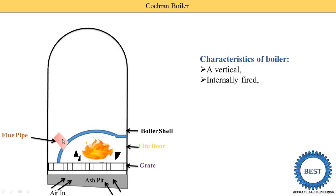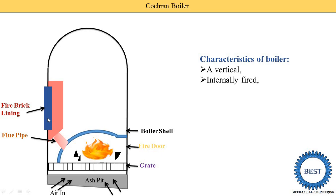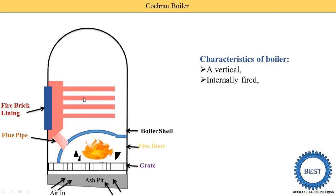The hot gases are supplied to the fire tubes by using the flue pipe. The orange part shown here is the combustion chamber, and it has a fire brick lining. This lining is provided so that heat is not rejected to the atmosphere. From the combustion chamber, different fire tubes are connected. Here we see four fire tubes, so due to multiple fire tubes, one characteristic of the Cochrane Boiler is that it is a multi-fire-tube boiler.